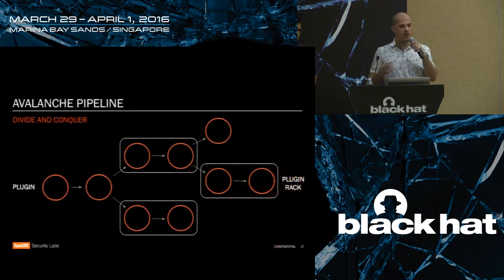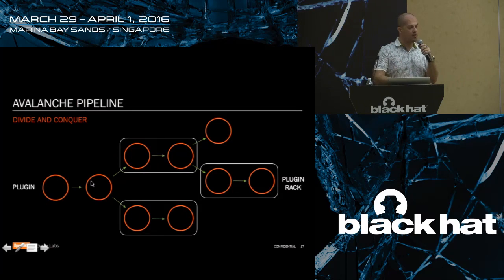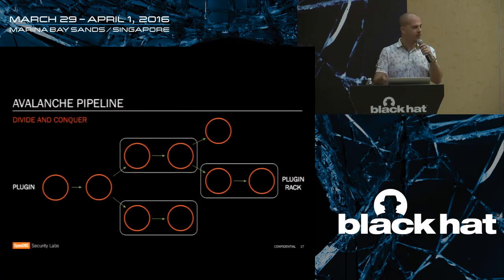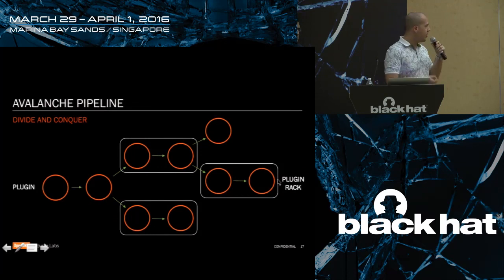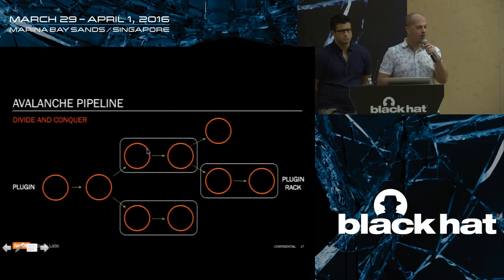In a nutshell, what is Avalanche? The main idea is to be able to design graph processing pipelines. A graph is made of nodes, and those nodes are basically plugins that you can write yourself or reuse from a database of ready-to-use plugins. Data comes in on the left side and goes down the pipeline. There's also this concept of plugin racks, because every plugin runs in its own thread. After a while your pipeline can become complicated, so you need to manage the number of threads. A plugin rack is actually one thread for a group of plugins.